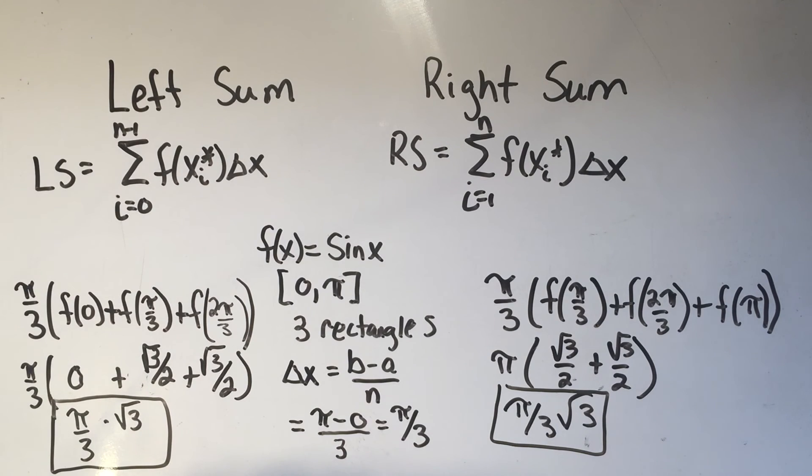Now, it is a coincidence, I'll repeat, it's a coincidence that the left sum and the right hand sum equal the same thing here. That does not usually happen. Usually, you're going to get different answers. And usually, one of them is going to be an overestimate, and one of them is going to be an underestimate.